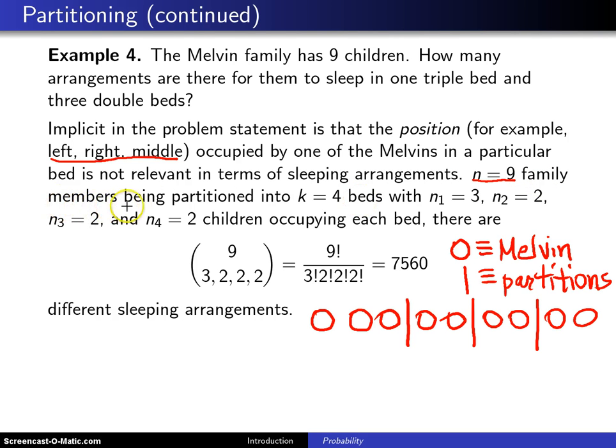And they are being partitioned into k equals four beds, one, two, three, and four. There are three in the triple bed, and then two, two, and two in each of the double beds.